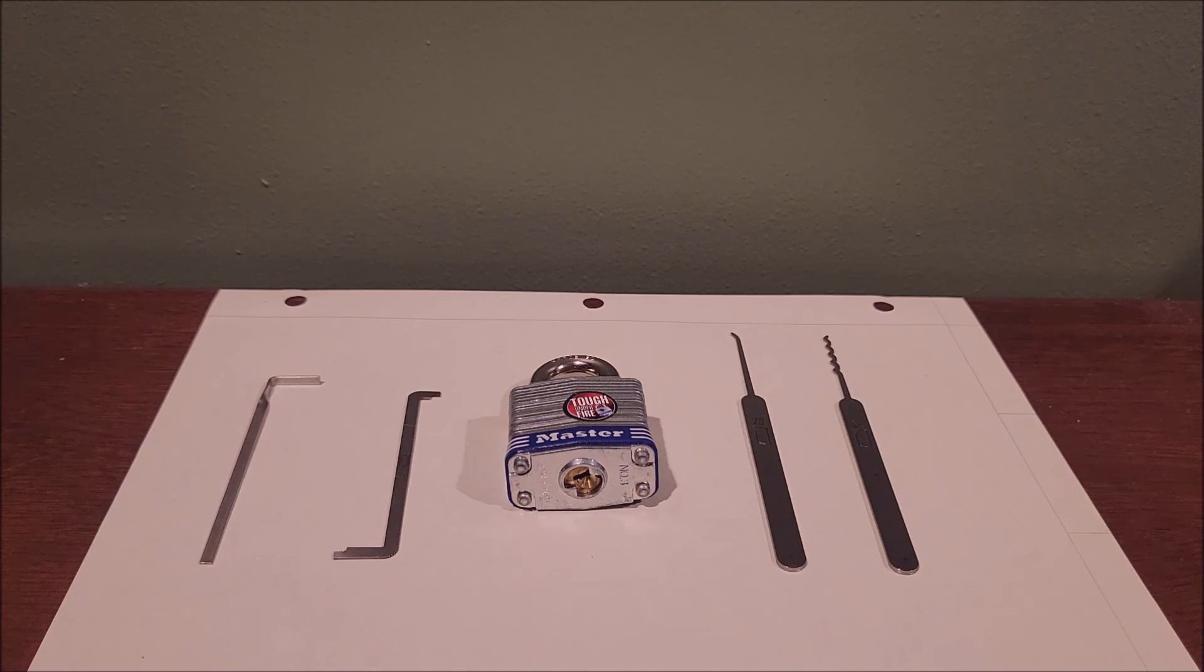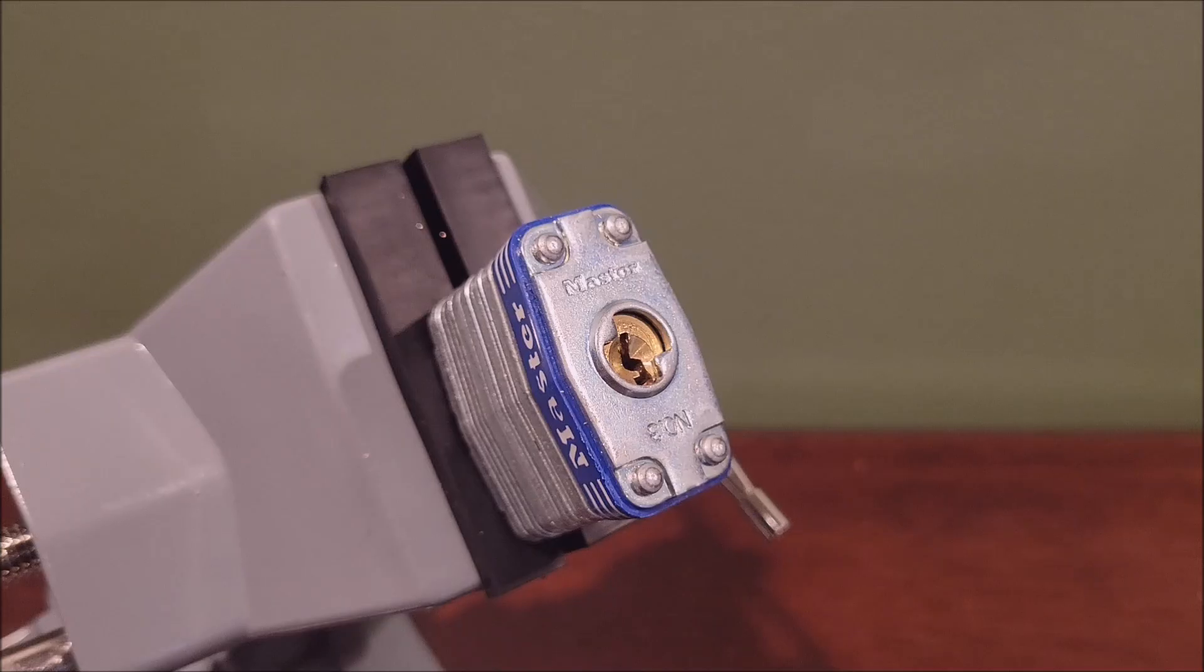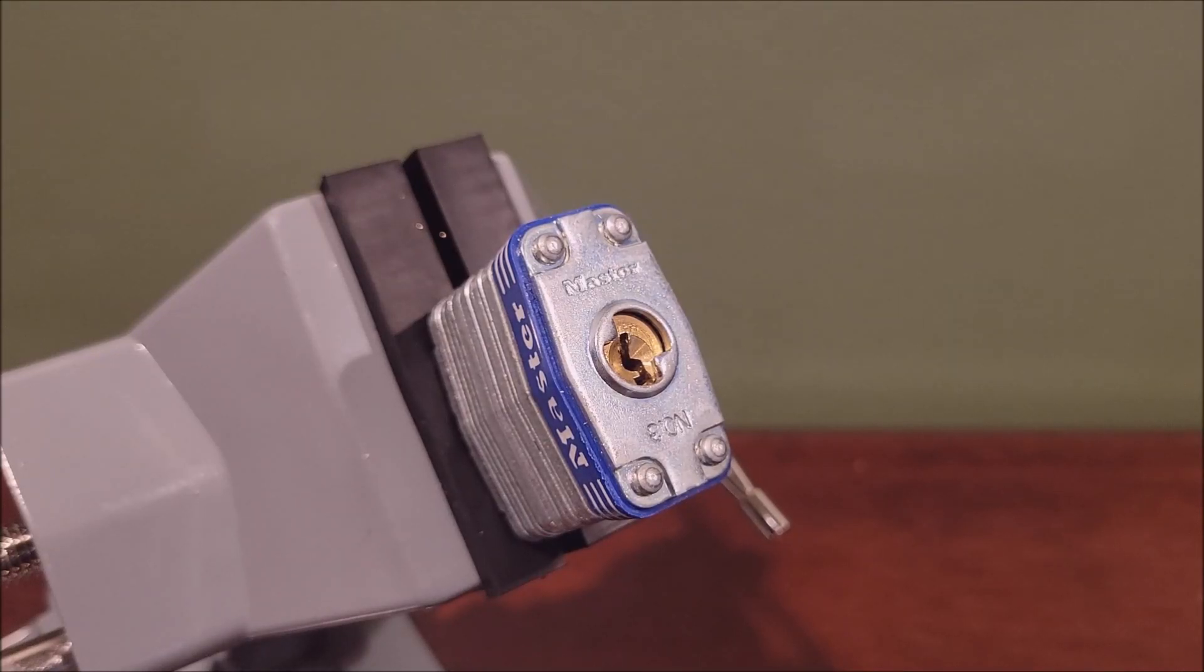Without further delay, let's transition into picking. First off, I will start with the raking method. For this, I'll use the twisted tension tool, insert it in the bottom of the keyway, and apply a little tension.